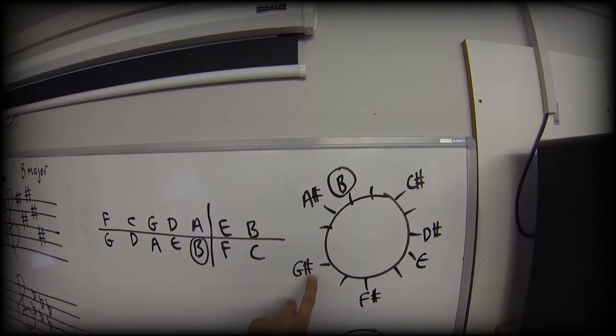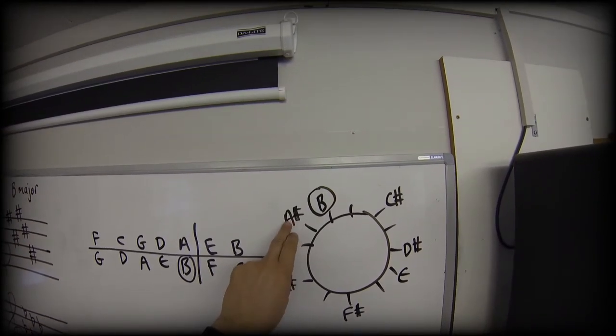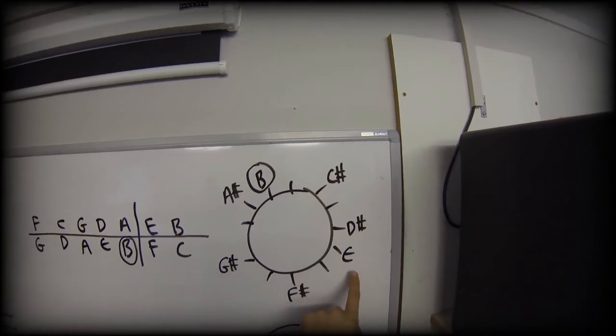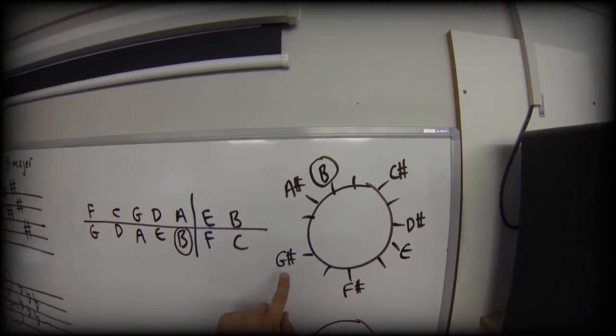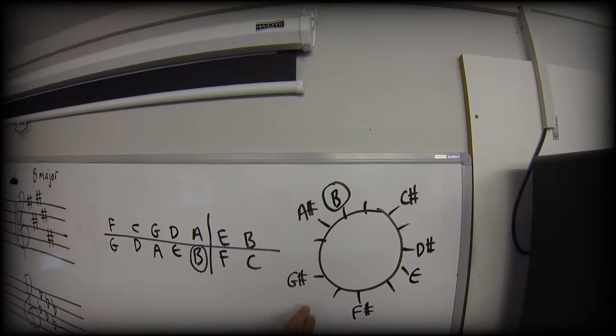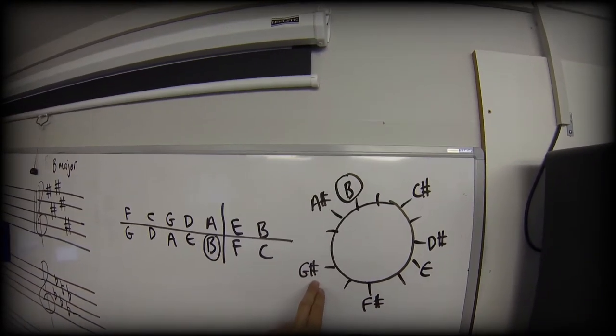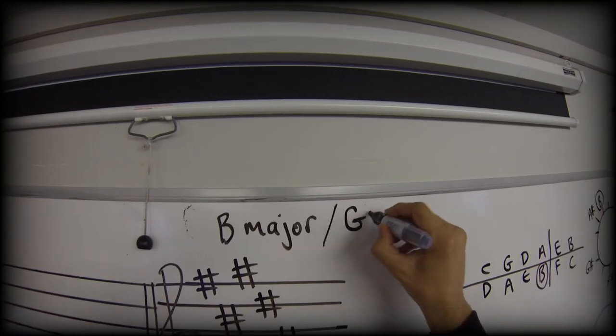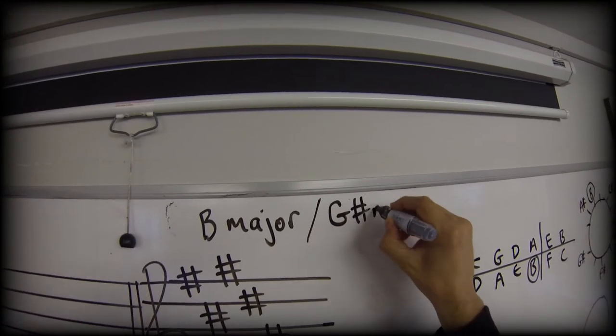And let's just look at that. Root, G sharp, two to the A sharp, one to the B, two to the C sharp, two to the D sharp, one to the E, two to the F sharp, two to the G sharp. Great, so that's a legitimate minor scale. So my two scales here are B major and G sharp minor.